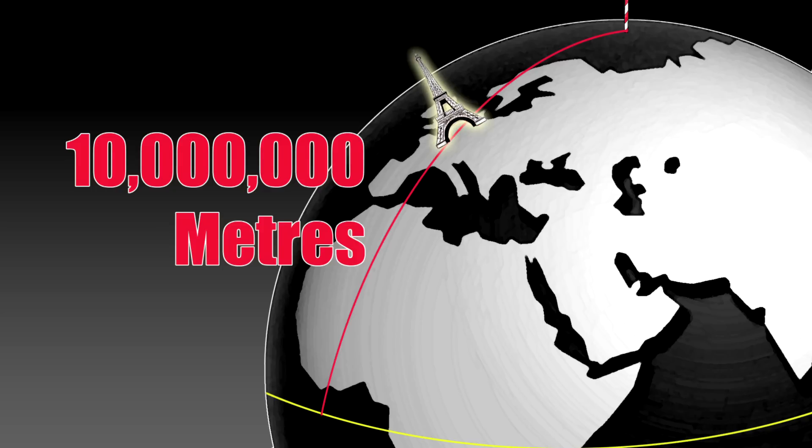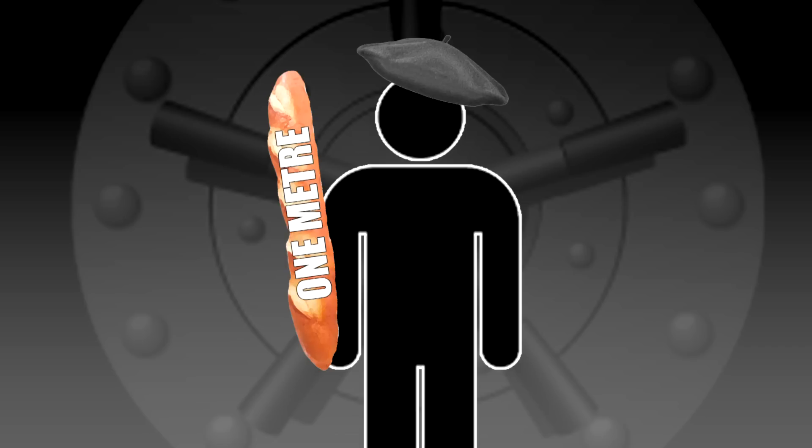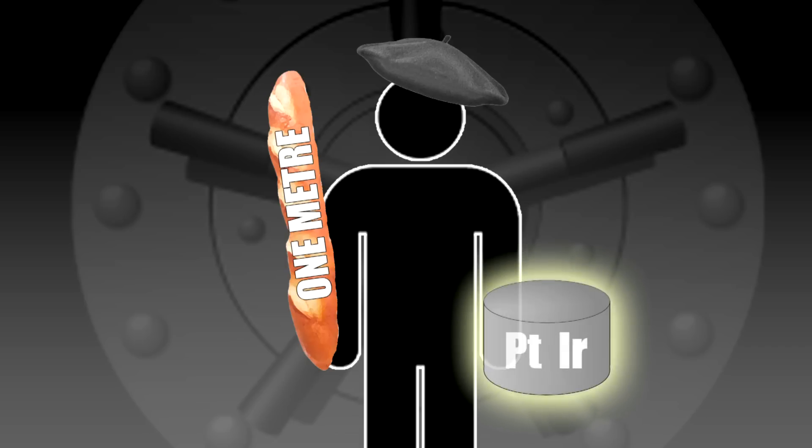Those were the original definitions, but it's not very practical. If you actually want to measure a meter, it's not very handy to have to measure the distance from the North Pole to the equator through Paris every time. So quite quickly the official definition of the meter changed to being the length of a particular rod also stored in a vault in Paris, and the definition of the kilogram was defined to be a particular mass stored in the vault in Paris.